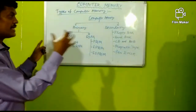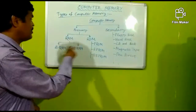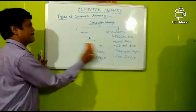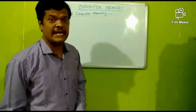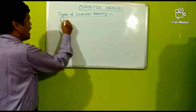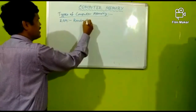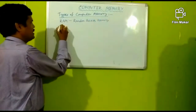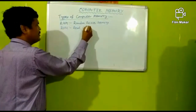These are the categories of computer memory. Now I will explain the full forms of all these terms. Please watch the video till the end — it is a very important video. RAM means Random Access Memory. ROM means Read Only Memory.